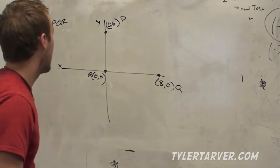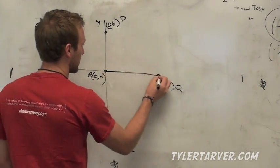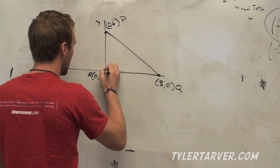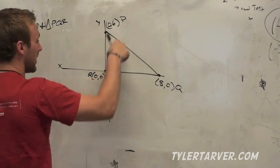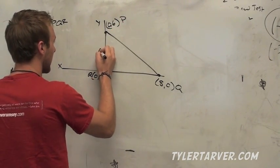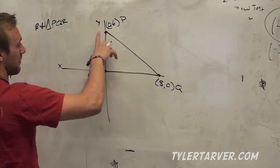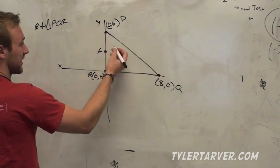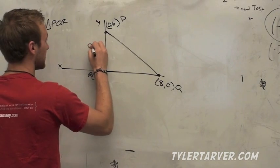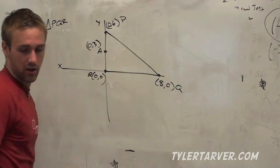All right. A is the midpoint of PR. So A is right there. We can already find the midpoint. They both go over zero. That one goes up six. What's the middle of six? Three. So that's zero, three.